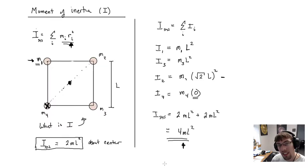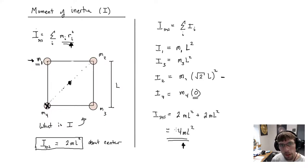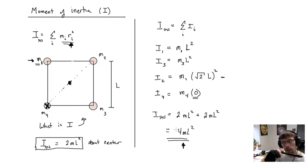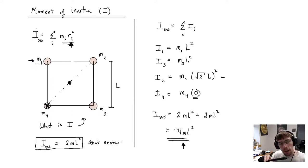By moving the rotation axis from the center to one of the corners, we have increased the moment of inertia. Therefore it's going to be harder to rotate the object. If the moment of inertia went up and you apply the same torque, the angular acceleration will decrease. This is exactly like twiddling a pen about its center versus about one of its ends — same mass, but how far the mass is distributed from the pivot changes the moment of inertia.